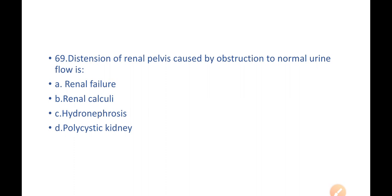Next question: Distension of renal pelvis caused by obstruction to normal urine flow is—they are asking a condition that is caused by obstruction to normal urine flow. Here are the options: A) Renal failure, B) Renal calculi, C) Hydronephrosis, D) Polycystic kidney.